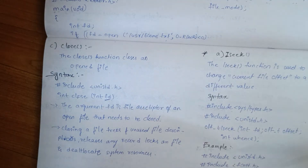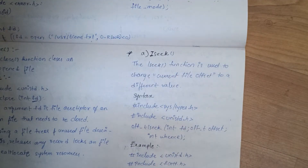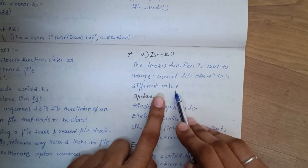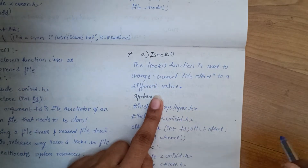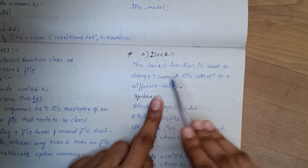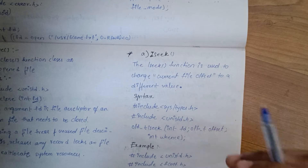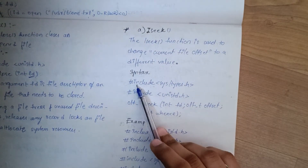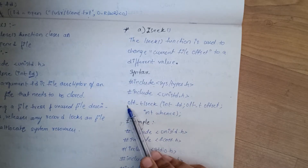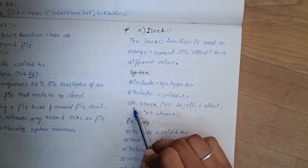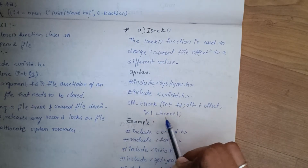Next is lseek. The lseek function is used to change the current file offset to a different value. The syntax includes sys/types.h and unistd.h. The signature uses off_t lseek(int fd, off_t offset, int whence), where fd means file descriptor and offset is the value to change to.